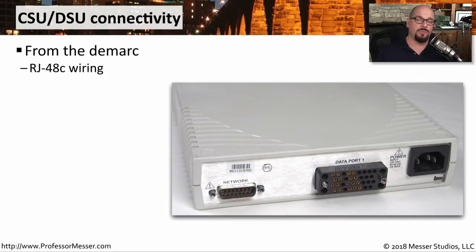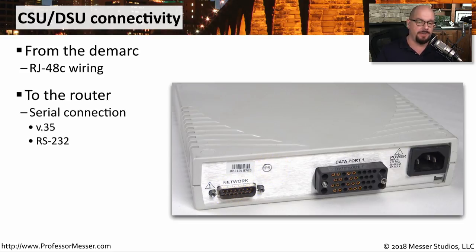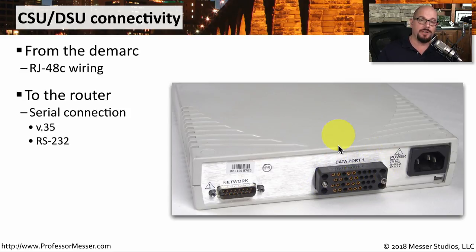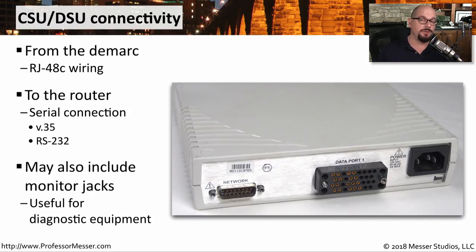From the demarc, we often connect with an RJ45-like connection that's technically an RJ48C. It might also come in and connect through a 15-pin connector to a network interface on a CSU-DSU. There are a number of different ways to connect between the CSU-DSU and the router, but some of the more common might use a V35 connection, which is a larger blocky connection, or it might be a 25-pin serial connection between the CSU-DSU and the router. Some CSU-DSUs also include monitor jacks that allow you to connect diagnostic equipment without disrupting the connection that's already in place.